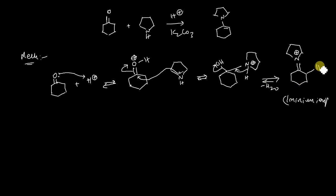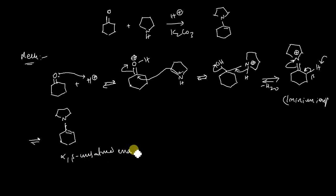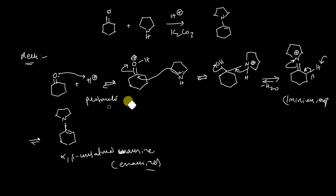Now, the proton at the beta position will be abstracted by one more mole of pyrrolidine. The loss of this proton at the beta position which is next to nitrogen generates the required alpha-beta-unsaturated amine, which is also called the enamine. So the mechanism is: first, protonation of the carbonyl compound to make the carbonyl carbon more electrophilic; then nucleophilic attack of pyrrolidine; then loss of water to give the iminium ion; and finally, loss of the proton at the beta position to give the alpha-beta-unsaturated amine.